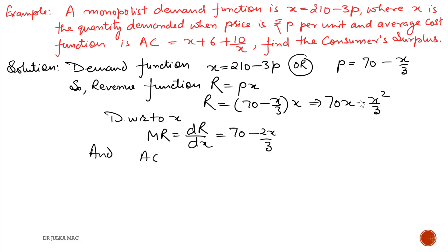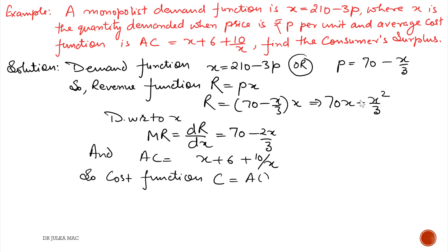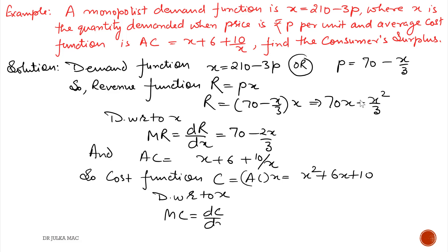The average cost is given as AC = x + 6 + 10/x. The cost function is AC × x, so cost function C = x² + 6x + 10. Differentiating with respect to x gives marginal cost MC = 2x + 6.